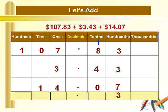Now simply add the digits at the tenths place: 4 plus 8 plus 1 gives us 13. Put the 3 below the tenths place and carry the 1 to the ones place. Now let's add the digits on the left of the decimal point — add the digits at the ones place: 4 plus 3 plus 7 plus 1 gives us 15. Put the 5 below the ones place and carry the 1 to the tens place.